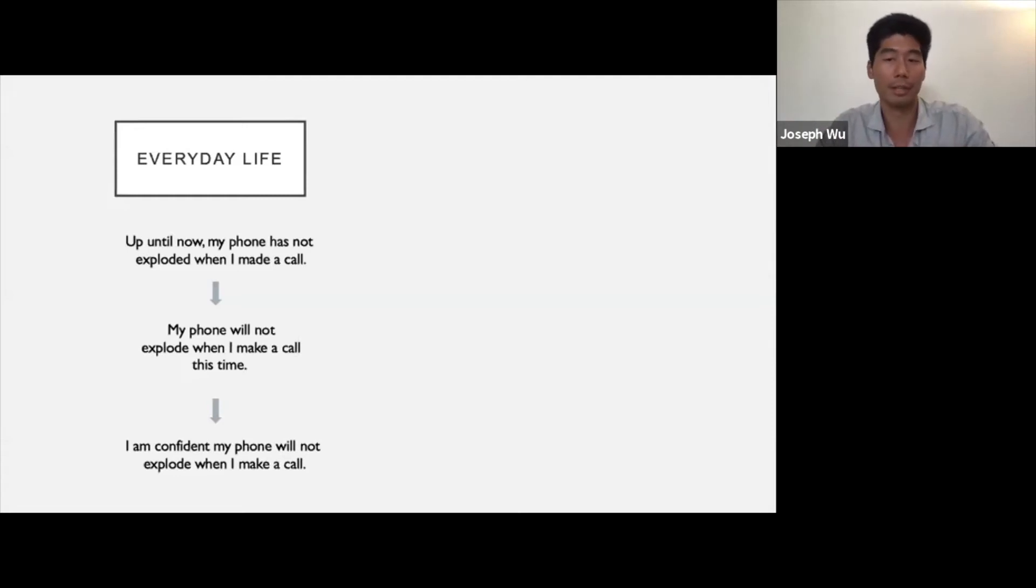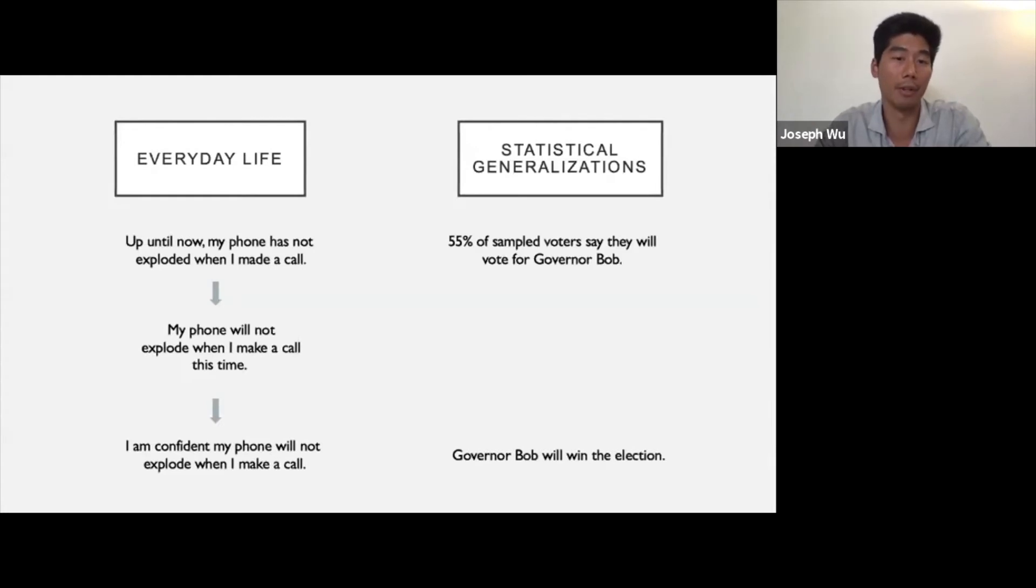We also use induction when reasoning about statistics. For example, you might see a claim like this: Governor Bob will win the election. How did one arrive at this conclusion? Well, suppose that 55% of sampled voters say they will vote for Governor Bob. Then from this, an inference is made: Governor Bob will receive 55% of the vote in the real election. And so we conclude that Governor Bob will win the election.